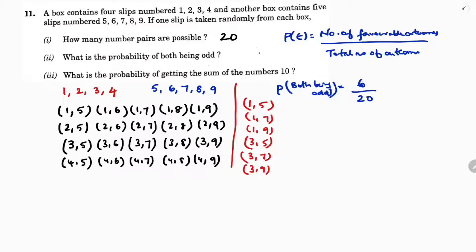So six possibilities out of twenty. Simplifying: six by twenty equals three by ten. So the answer is three by ten. Next question: what is the probability of getting the sum of at least ten? At least ten means ten or more than ten.